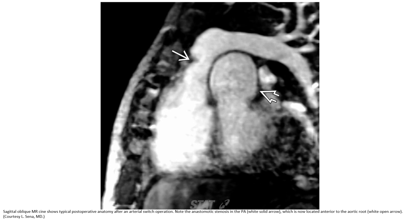Axial cardiac CTA showing typical postoperative anatomy after the arterial switch operation — anastomotic stenosis in the pulmonary artery, which is now located anterior to the aortic root.